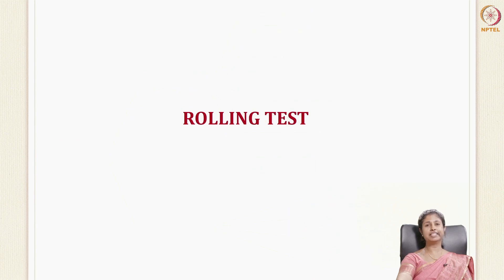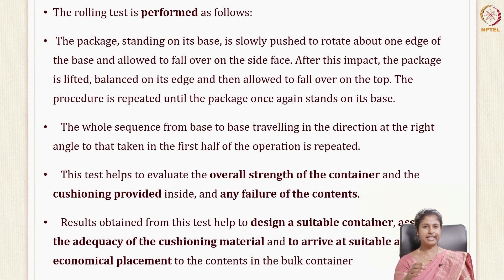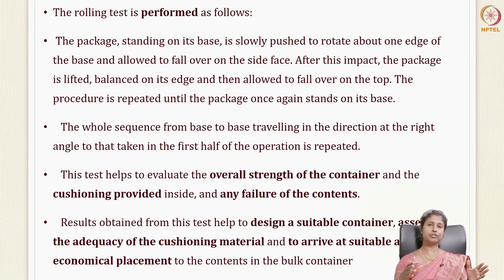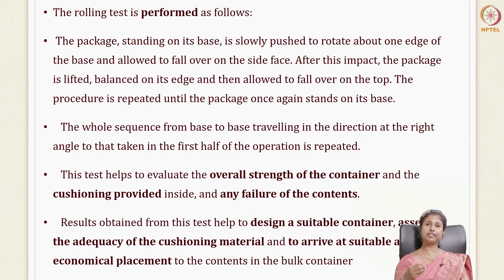Continuing with the rolling test. As the name indicates, just like the drop test where you drop it from a particular height, in the roll test you will roll it on all six faces. You also have edges and corners. The transit packages — your cardboard corrugated fiber boards — are rolled on the ground on the surface where they are likely to encounter it.